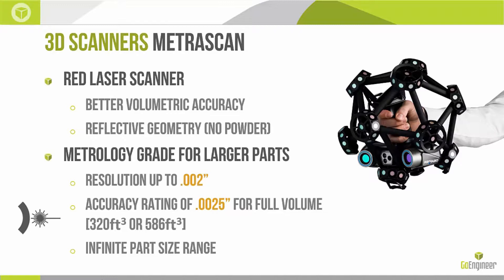The last scanner in the CreaForm lineup is the MetraScan. It's also a red laser scanner, but it has better volumetric accuracy than the other two product lines. One of its best features is its ability to pick up reflective geometry — unlike other scanners that require powder for reflective surfaces, the MetraScan can do it without targets or powder. This scanner is also considered metrology-grade but was designed for larger parts. Resolution goes up to 2 thousandths of an inch. The MetraScan deals with a full volume accuracy rating — it can be purchased with 320 or 586 cubic feet of scanning volume, and as long as you're scanning within that volume, your accuracy will be plus or minus 2.5 thousandths of an inch, guaranteed.